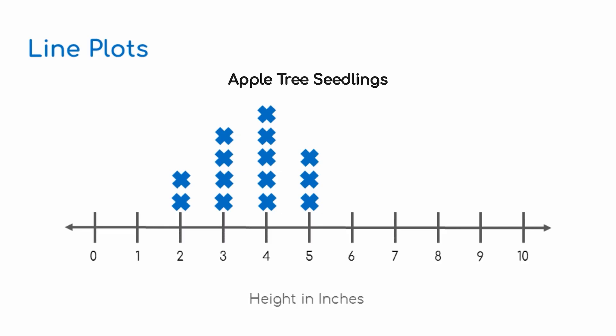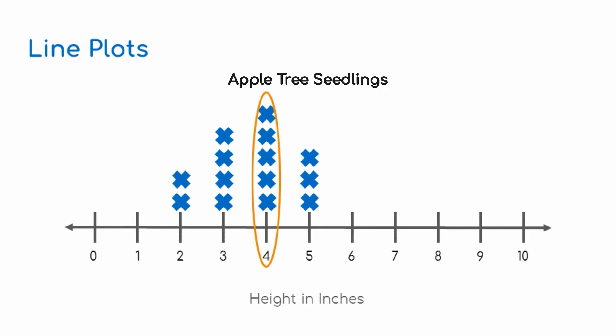For example, this number line displays the data recorded for the height of apple tree seedlings. At the time the data was taken, two seedlings were two inches tall, four seedlings were three inches tall, five seedlings were four inches tall, and three seedlings were five inches tall.